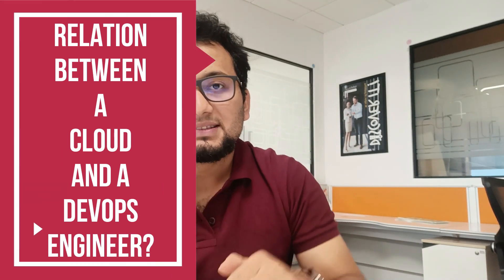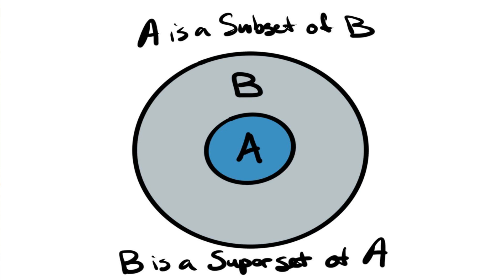A DevOps engineer is considered a superset of a cloud engineer, meaning the bigger entity, while the cloud engineer is a subset that inherits some qualities of the superset. When you apply for a DevOps engineer role, employers expect you to know at least the basics of cloud, since most organizations are moving away from on-premise systems toward public cloud. That said, they are still two separate entities and positions.